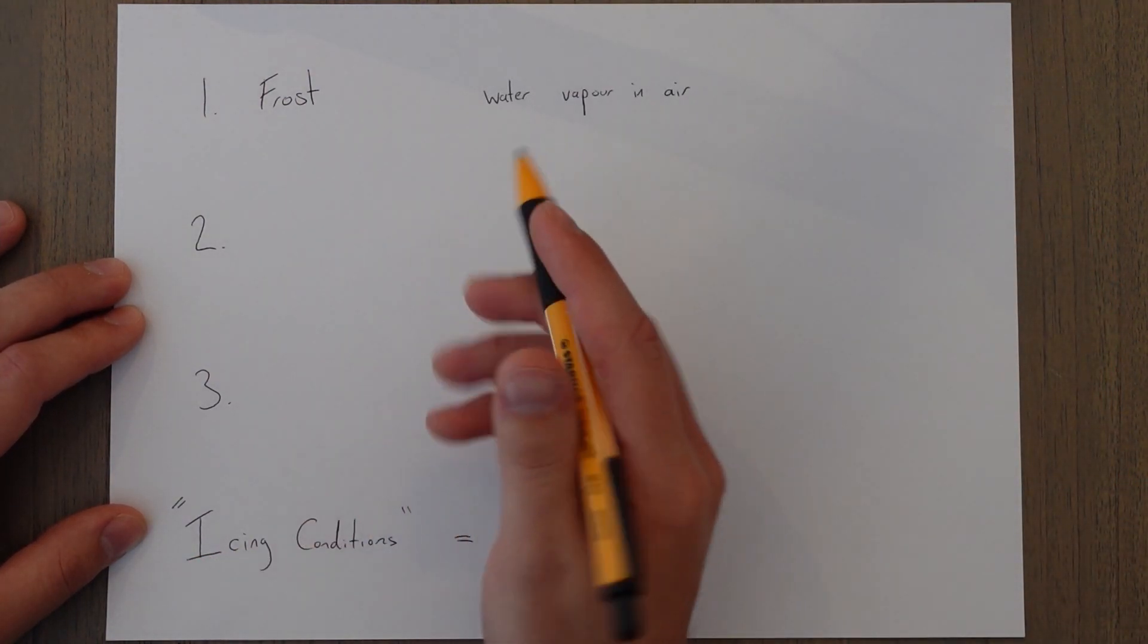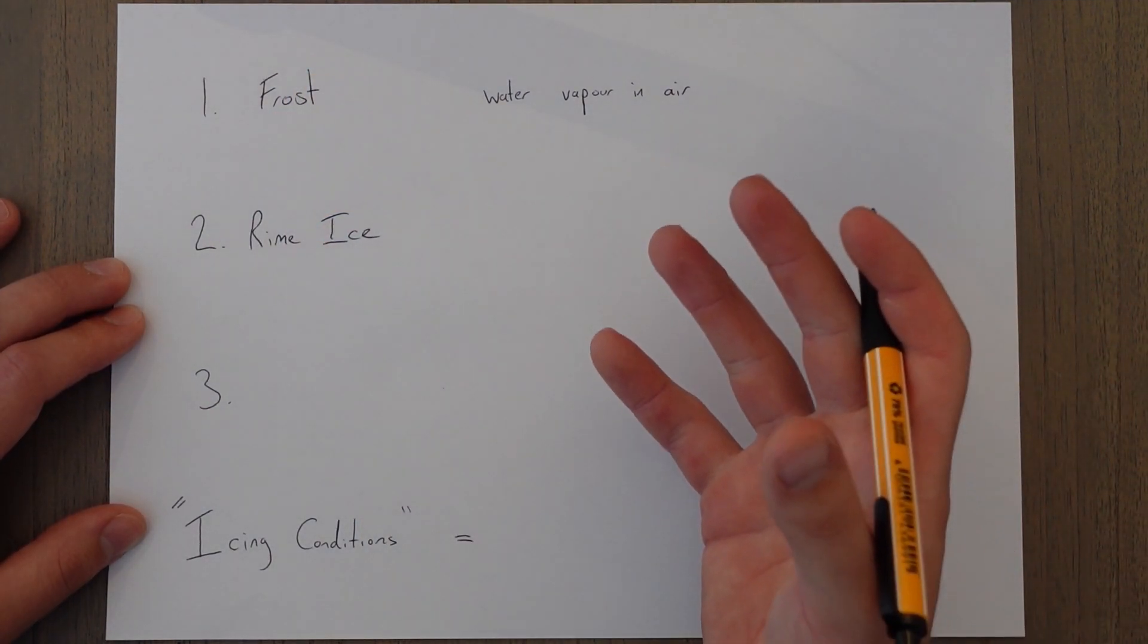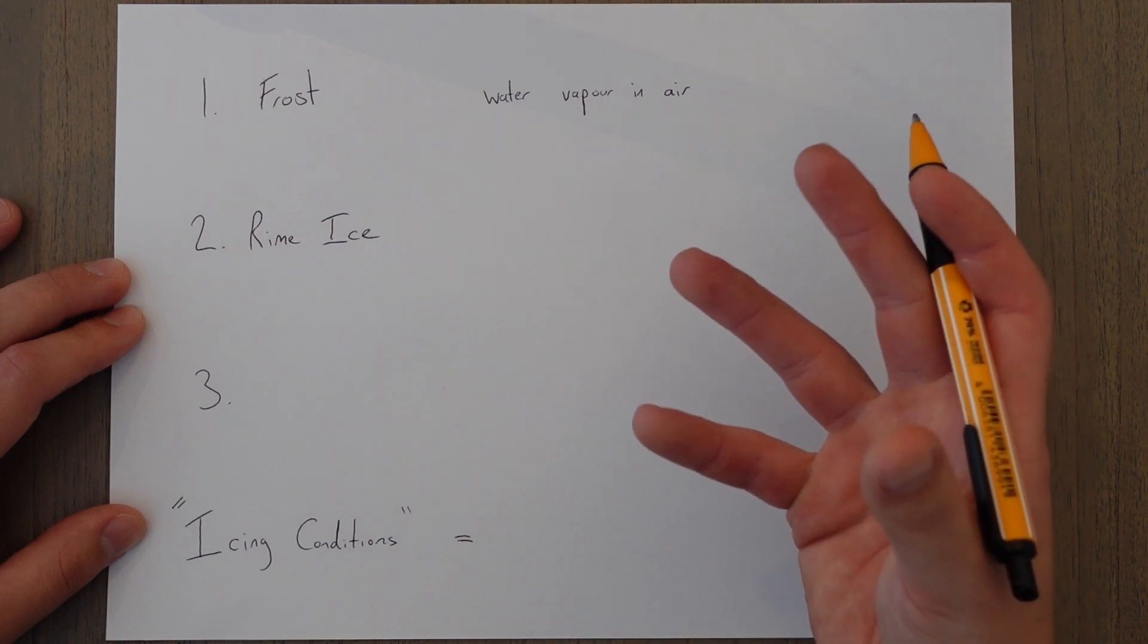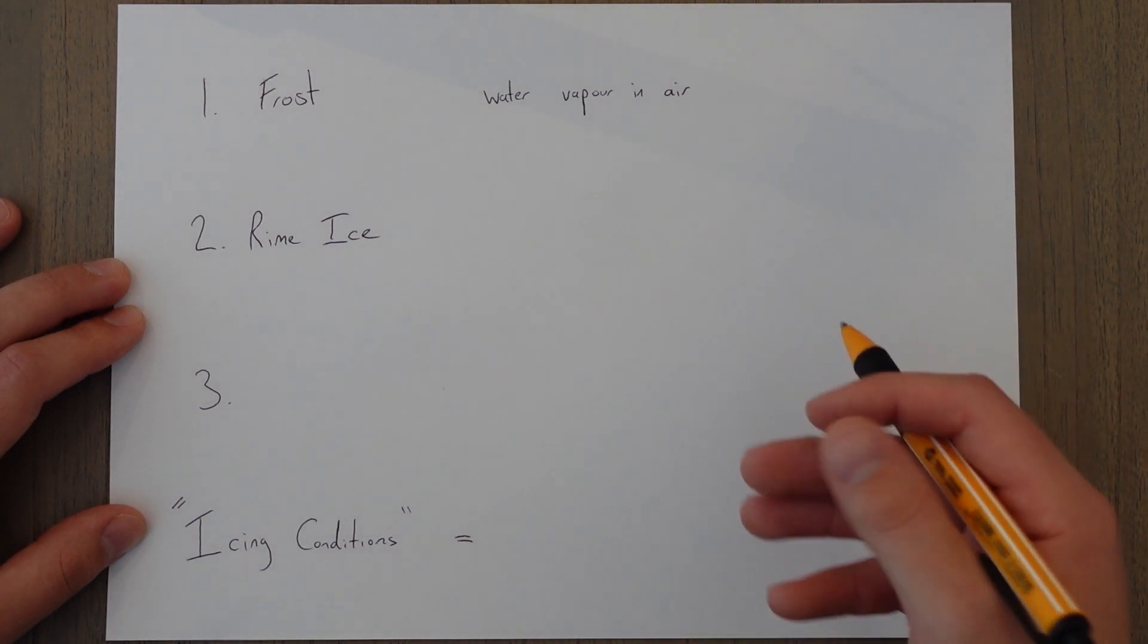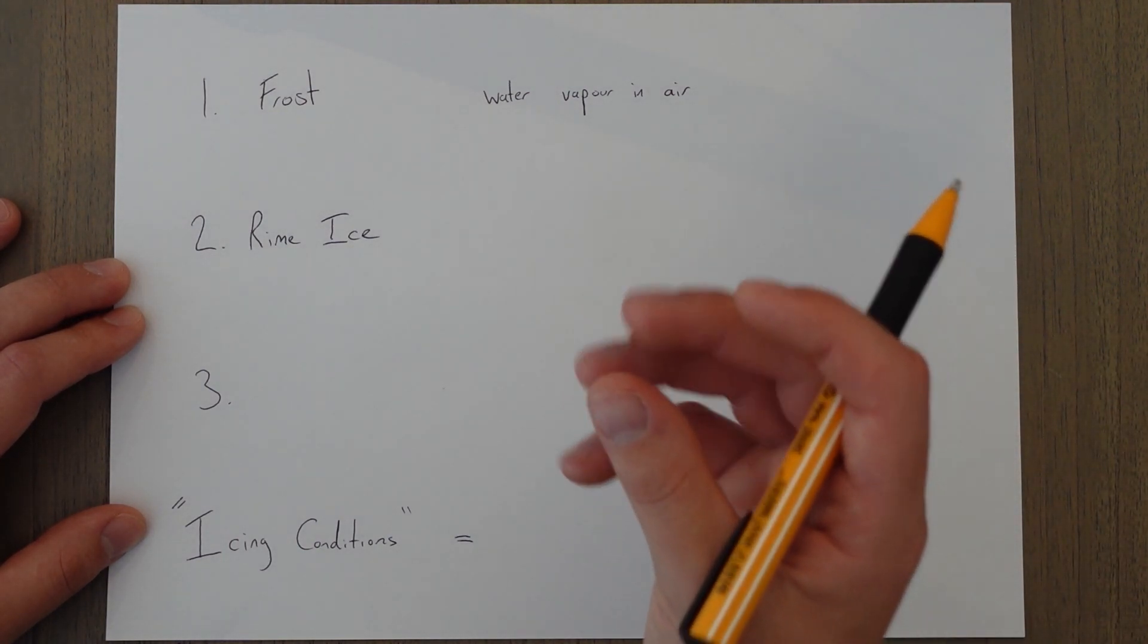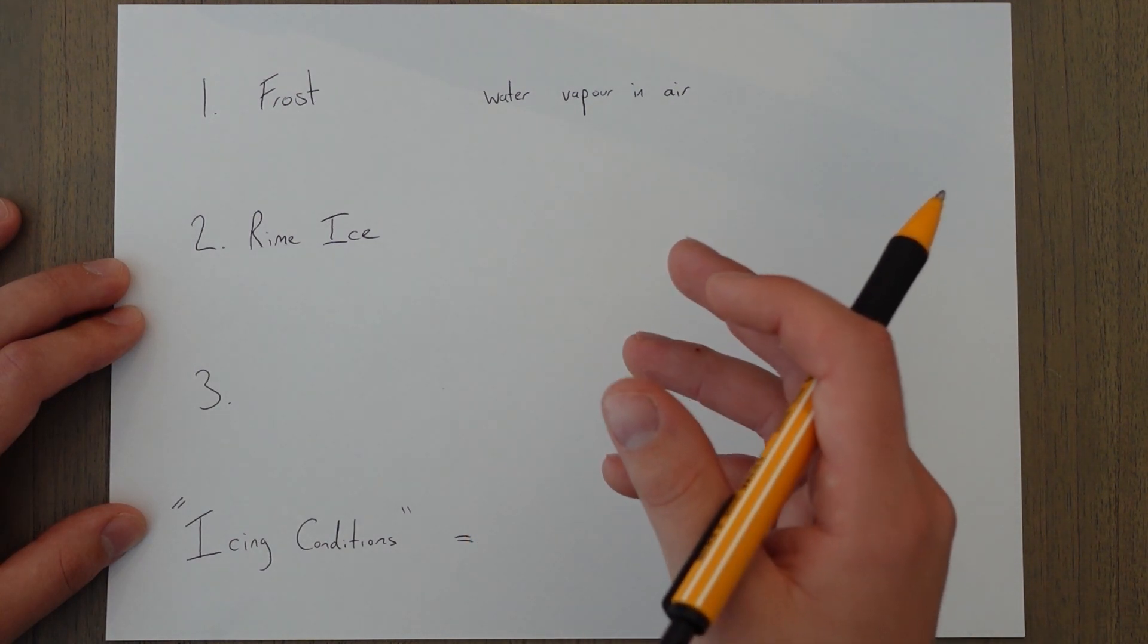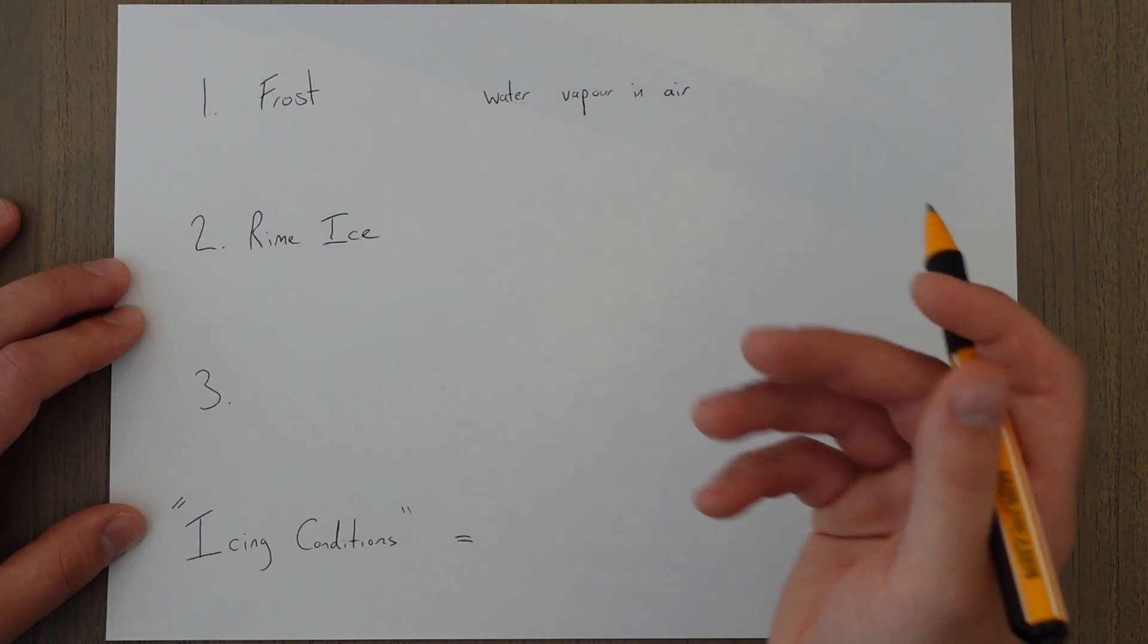The second type of ice is something known as rime ice and it is formed on the leading edge of the flight surfaces. It occurs when super cooled water droplets finally have something to attach to and quickly freeze into ice crystals. Rime ice is pretty brittle because the freezing process happens really quickly which means there are loads of air pockets trapped within the structure and that creates weak points.